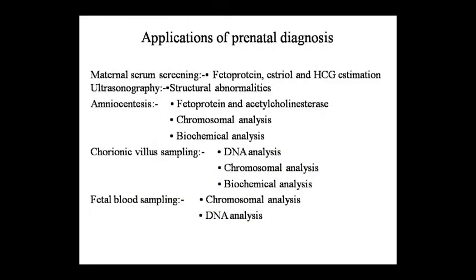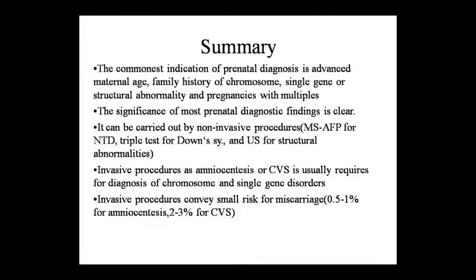Applications of prenatal diagnosis include maternal serum screening for alpha-fetoprotein, estriol, and hCG, along with ultrasonography. Amniocentesis can assess alpha-fetoprotein, estriol, cholinesterase, chromosomal analysis, and biochemical analysis. Chorionic villus sampling allows DNA and biochemical analysis. Fetal blood sampling enables DNA analysis. The commonest indications for prenatal diagnosis are advanced maternal age, family history of chromosome or single-gene structural abnormality, and multiple pregnancy.